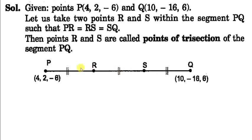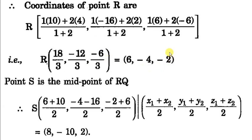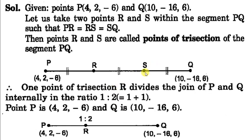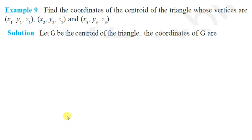Point R divides PQ in ratio 1:2, so using the section formula: x = (1×10 + 2×4)/(1+2), giving coordinates of R as (6, -4, -2). Point S can be found either by section formula with ratio 2:1, or since S is also the midpoint of RQ. Using the midpoint formula: S = ((6+10)/2, ...) giving coordinates of S as (8, -10, 2).